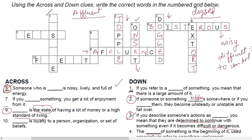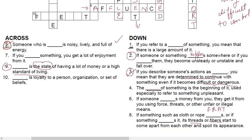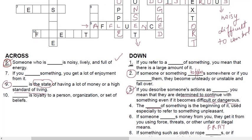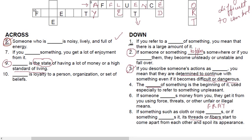So here it says, if something such as cloth or rope dashed or if something dashed, its threads or fibers start to come apart. So it frays. So you can say that my jeans have frayed or the cloth has frayed or the fabric has frayed. F-R-A-Y. So we have done the eighth one here.